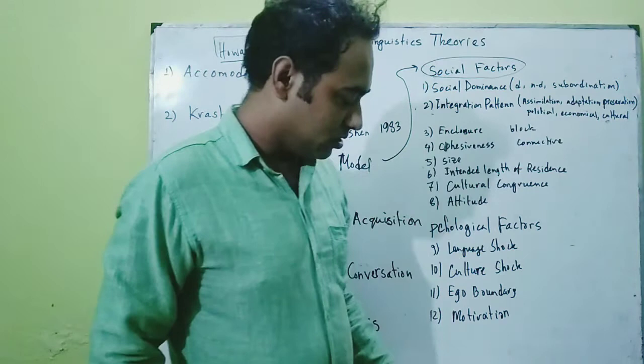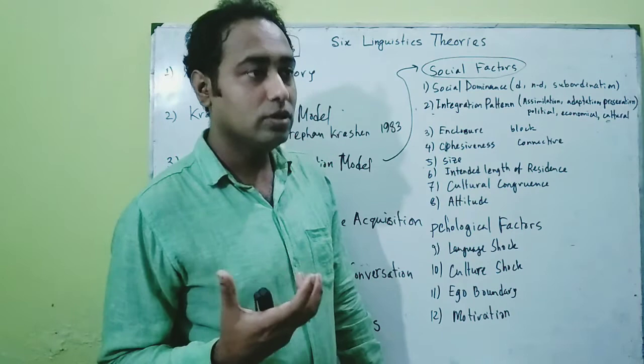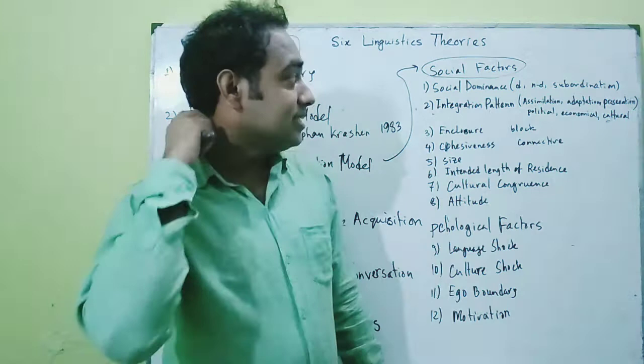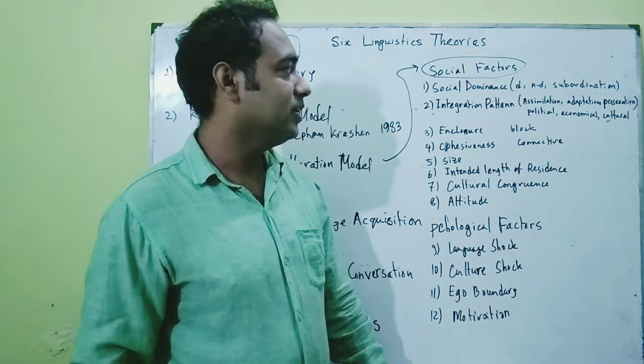The first social factor is social dominance. There is dominance, non-dominance, and subordination. When there is social dominance, the learner doesn't feel comfortable to learn. When there is non-dominance, a comfort zone is created and the learner automatically develops learning. When there is subordination, learning becomes very much inferior and the learner feels uncomfortable.